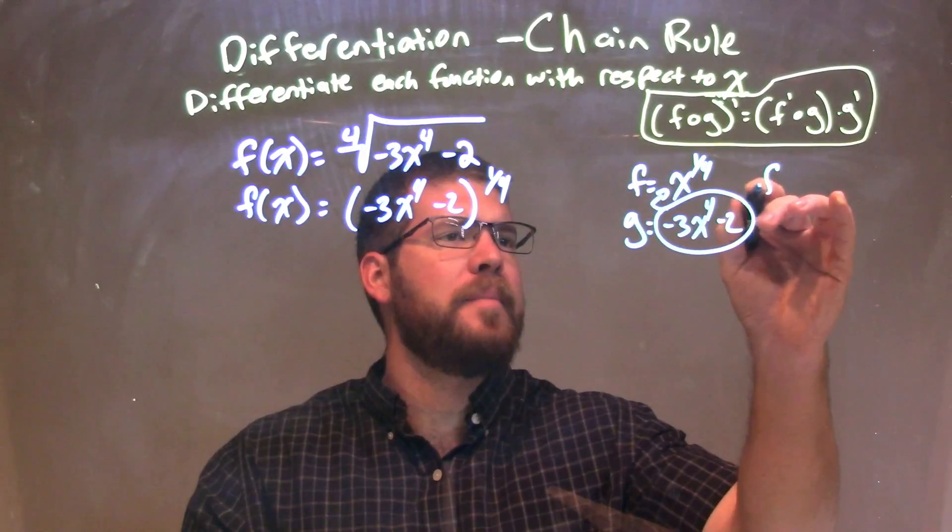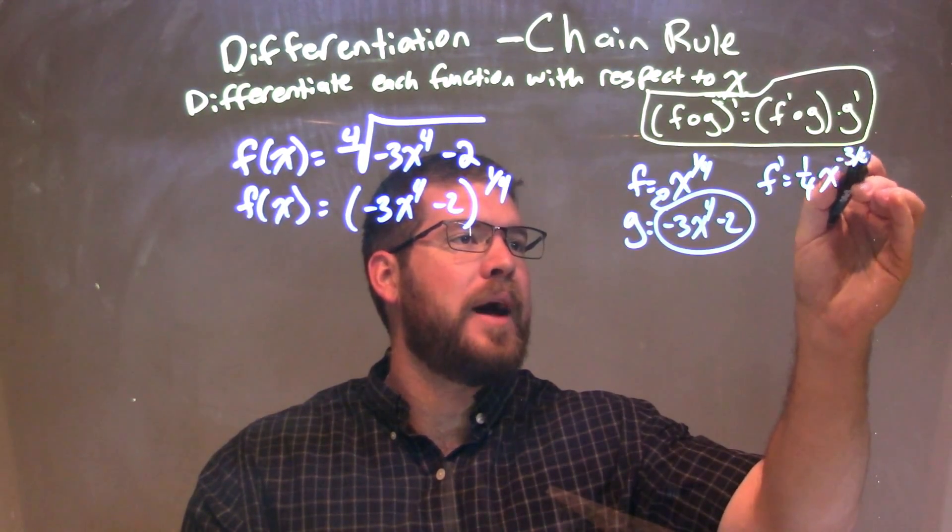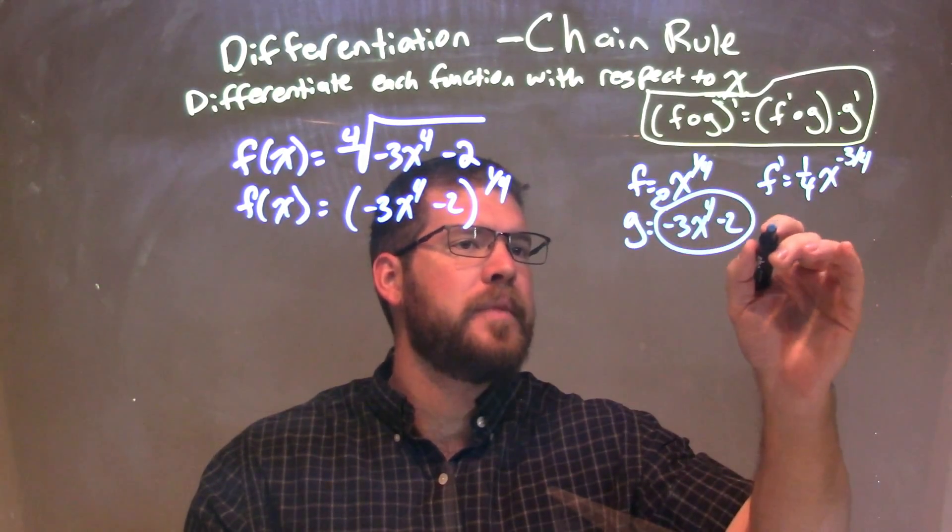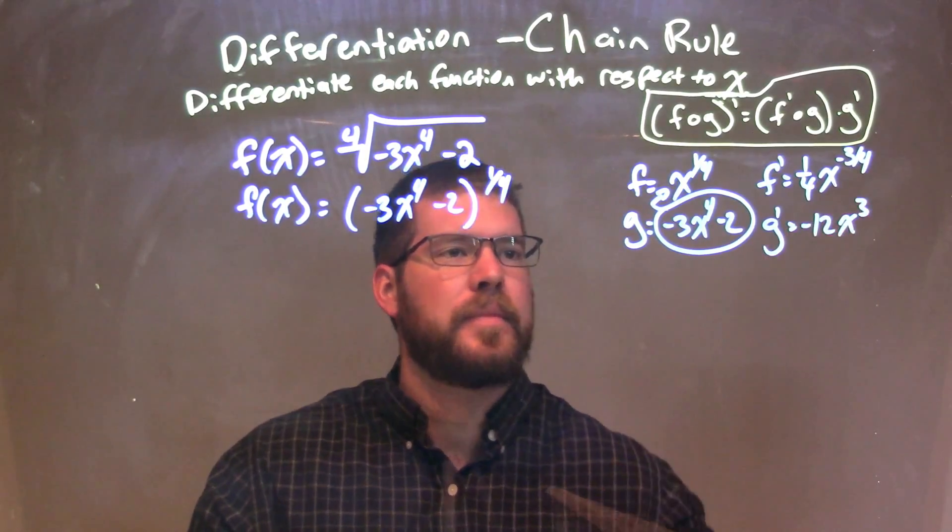So let's go find f prime. So f prime is one-fourth x to the negative three-fourths power. Okay, let's correct that. It's going up by one. And g prime is negative 12x to the third.